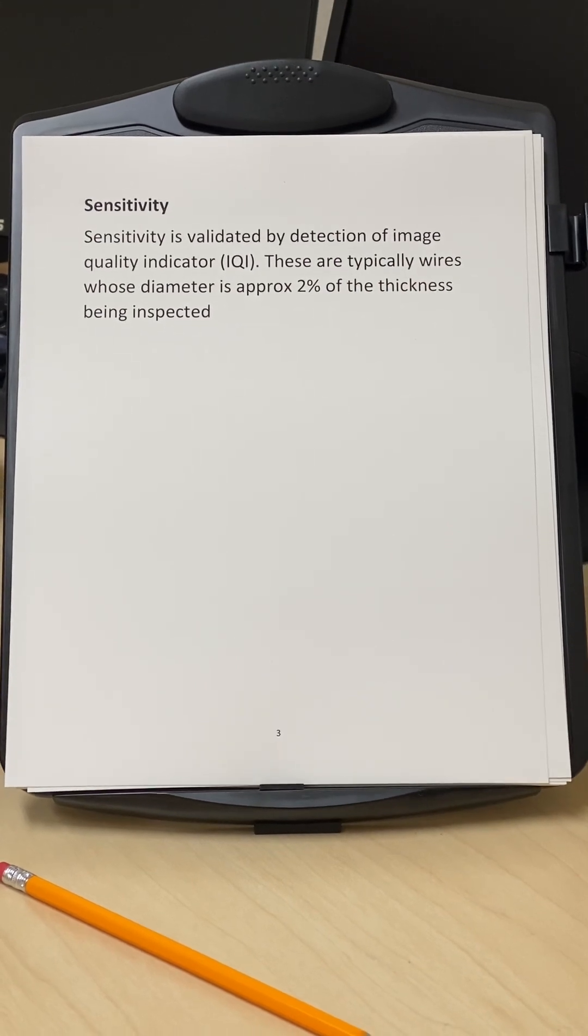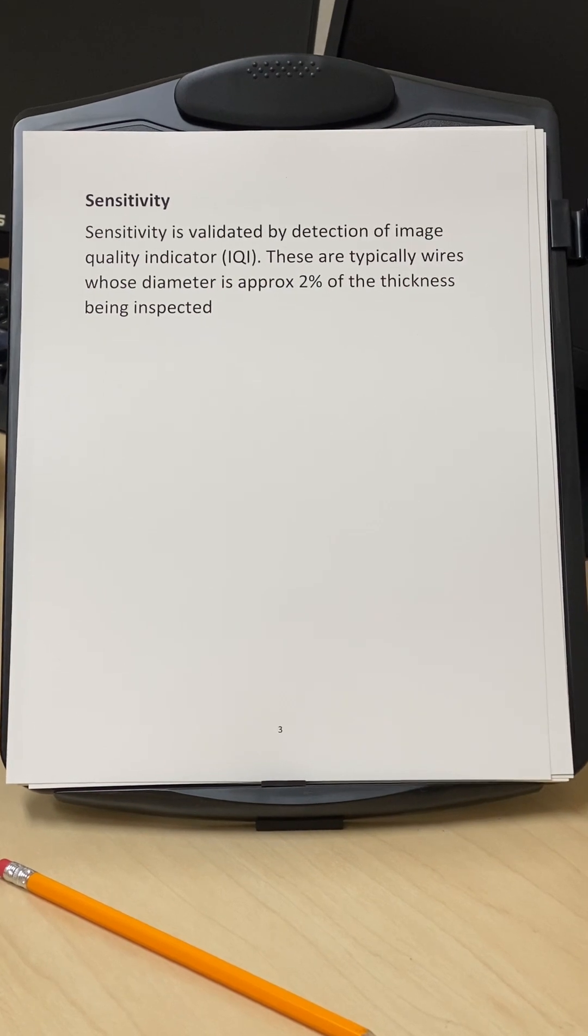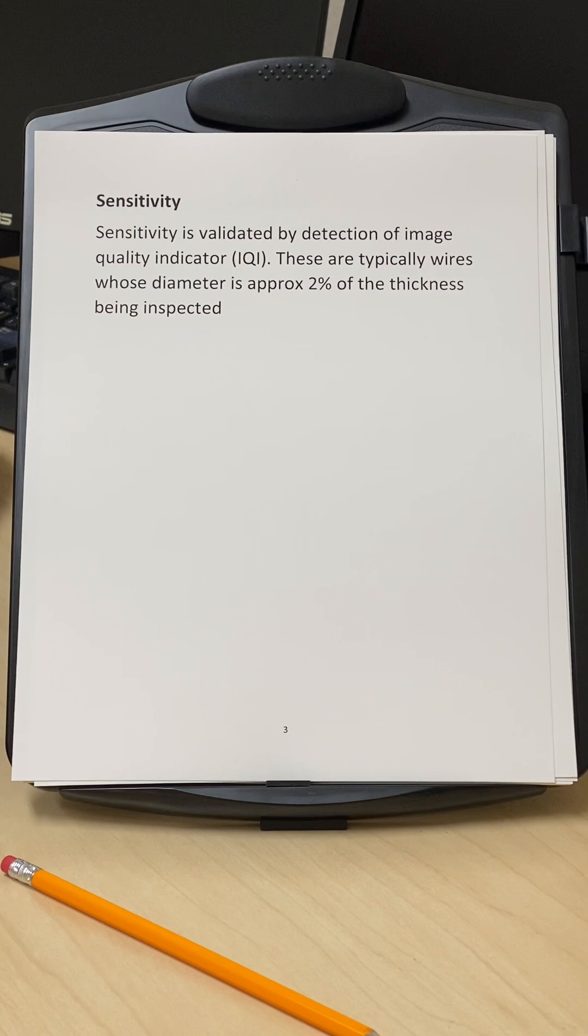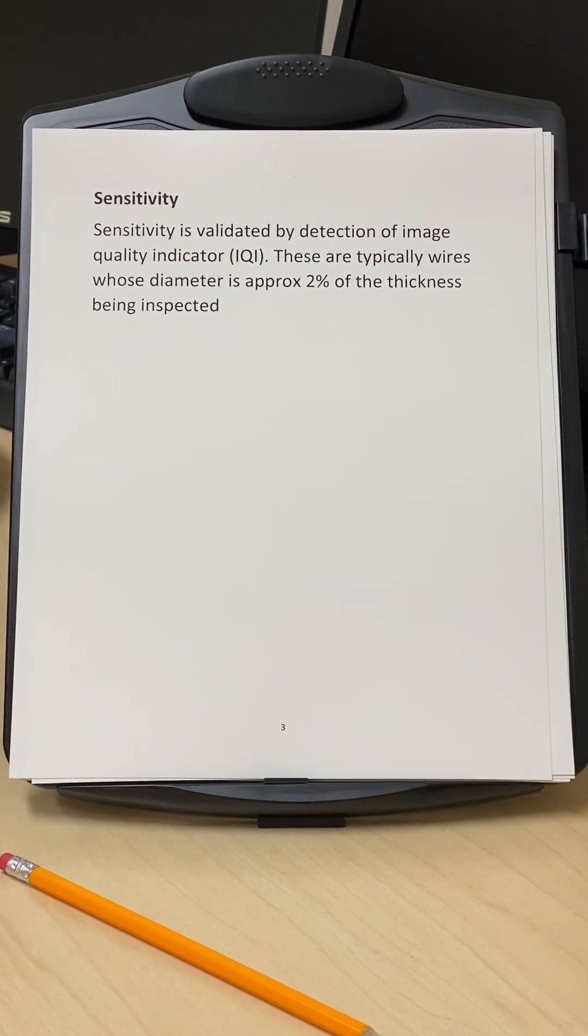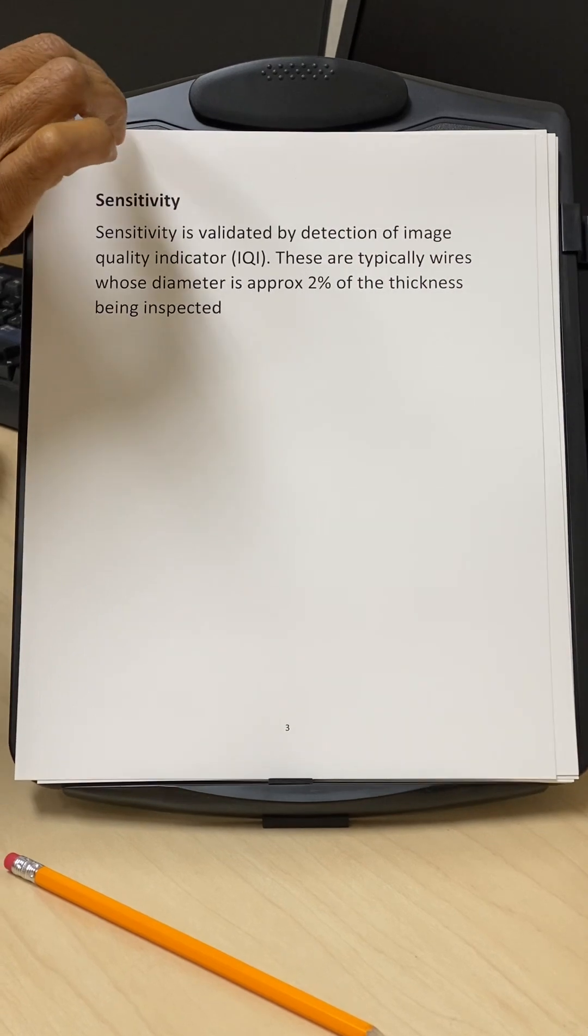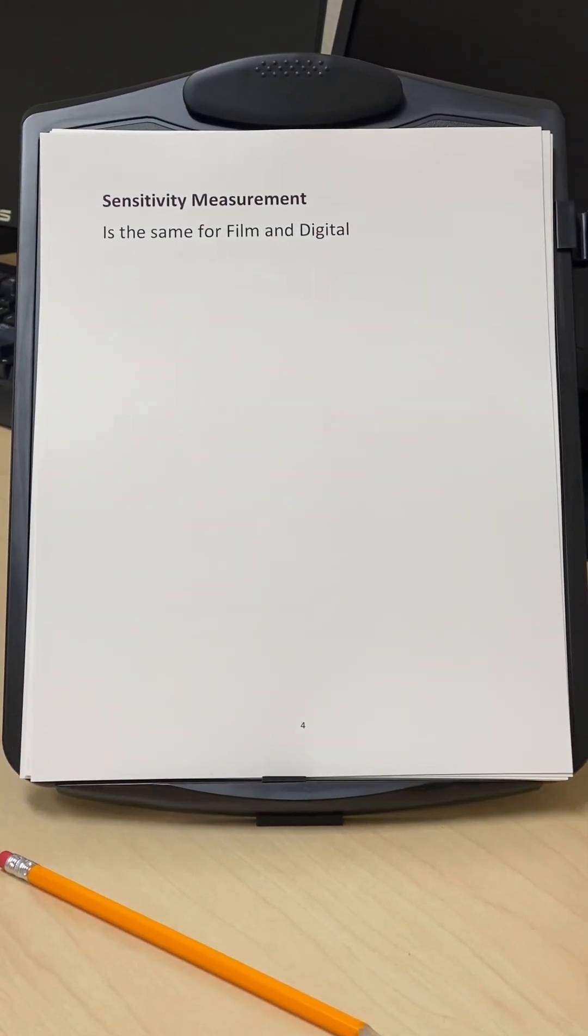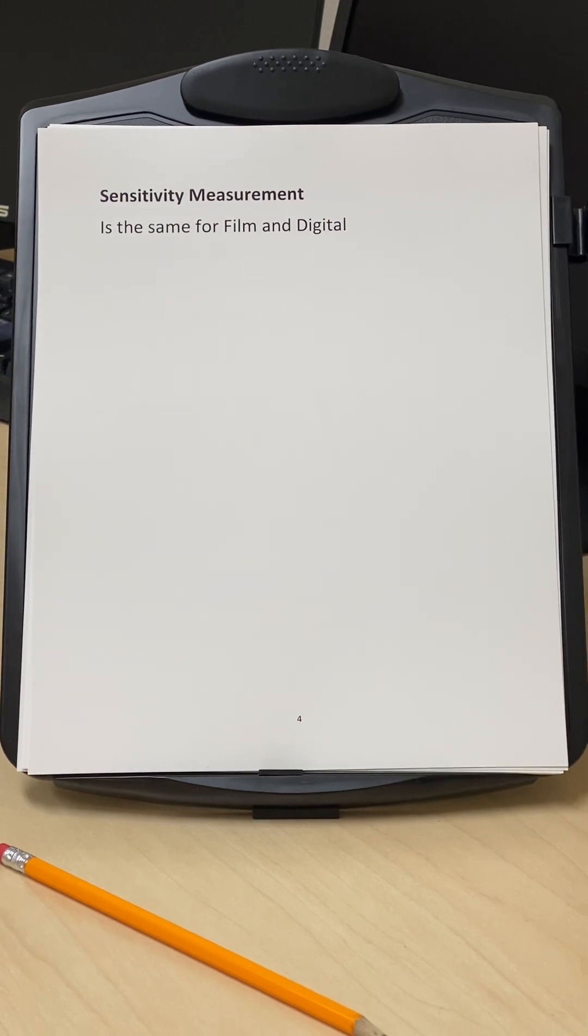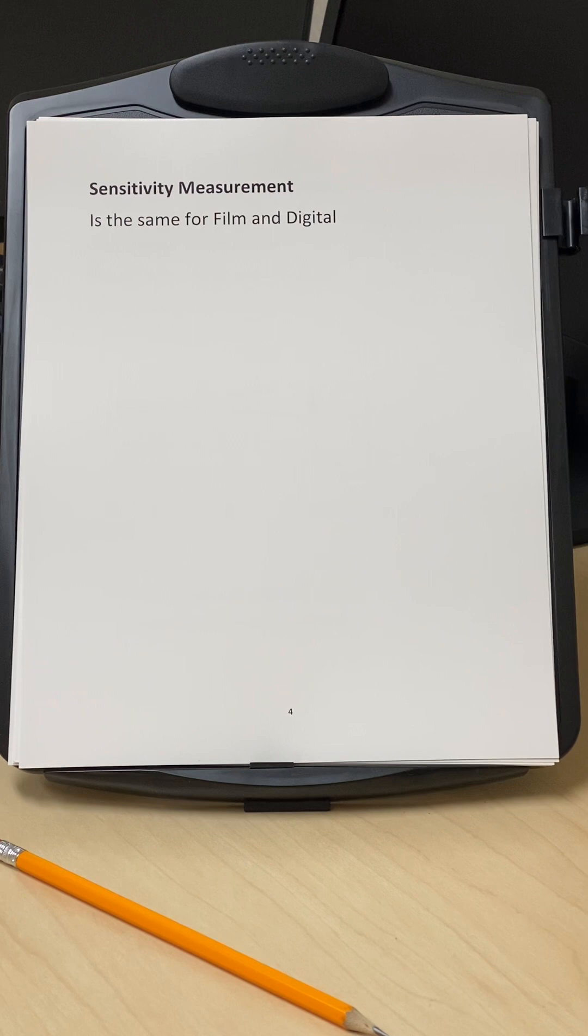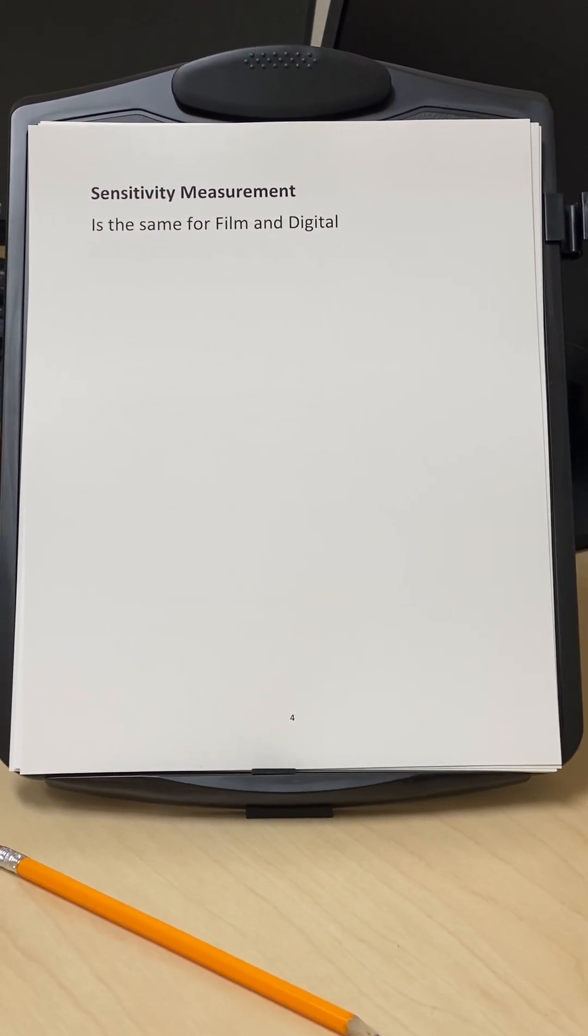Now as far as the digital and the film are concerned, it's the same. We use the same wire or the hole for the digital as well as for the film radiography. So there is no difference. So if we use, let's say, for film we have to detect wire number 5, it's going to be the same for digital - we have to detect the same wire number.